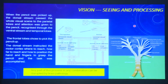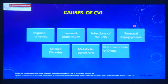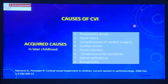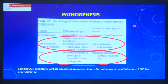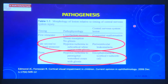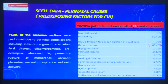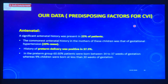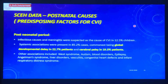The most common causes we see in our clinic are hypoxia, traumatic brain injury, infections of the CNS, neonatal hypoglycemia, seizure disorder, metabolic conditions, and maternal intake of drugs. We also have acquired causes. If injury occurs in the late second to third trimester, hypoxia to the subcortical area results in periventricular leukomalacia. Our data shows 90.9% had an eventful perinatal period. Preterm delivery was positive in 37.5% of patients, most common cause was infections, and cerebral palsy was the most associated factor in 19.3% of patients.